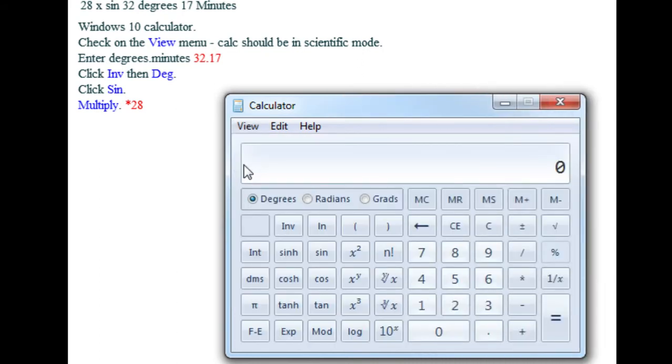Forget about everything else you're doing with your degrees and minutes. First, you need to get them sorted. So even though 32.17 doesn't normally mean 32 degrees and 17 minutes, we have to start by entering that: 3-2 point 1-7.